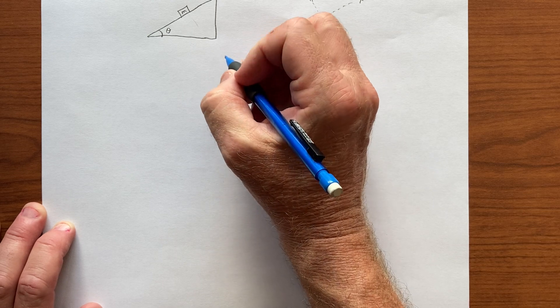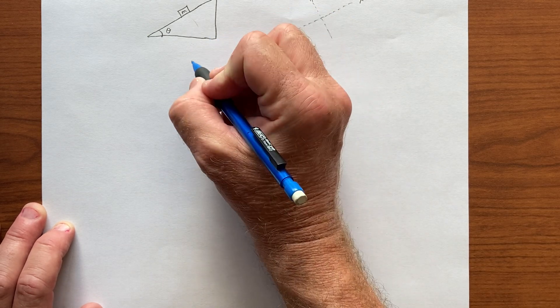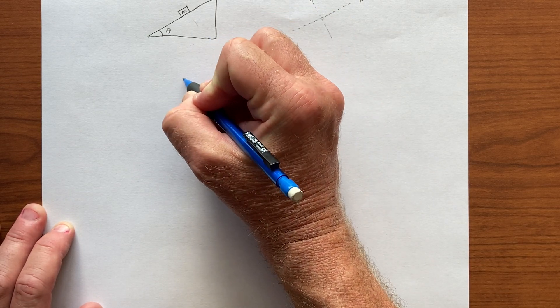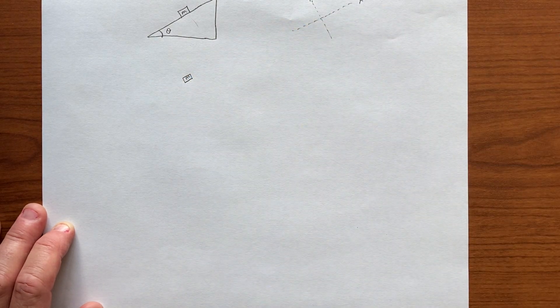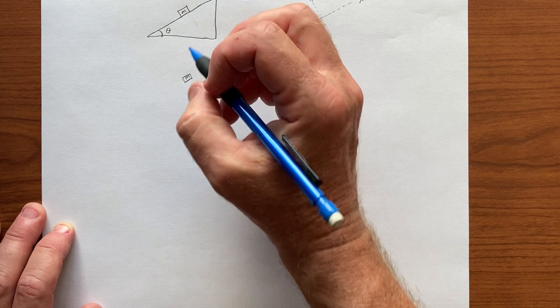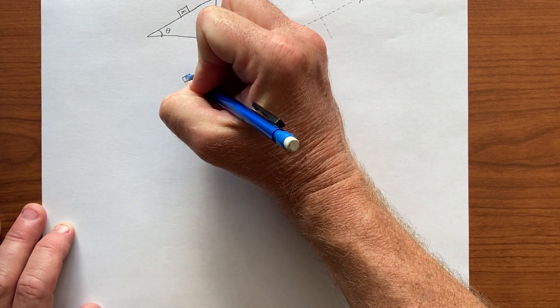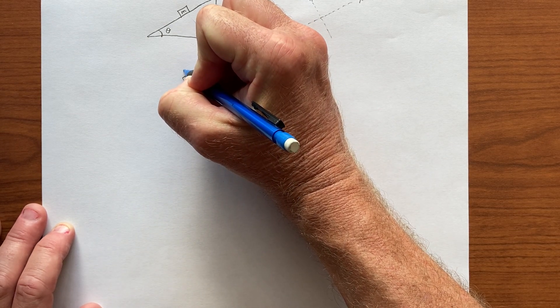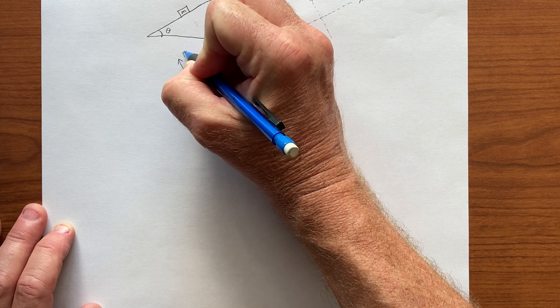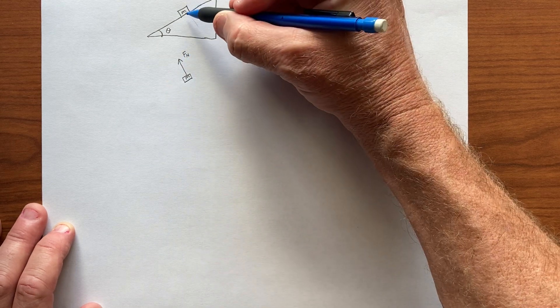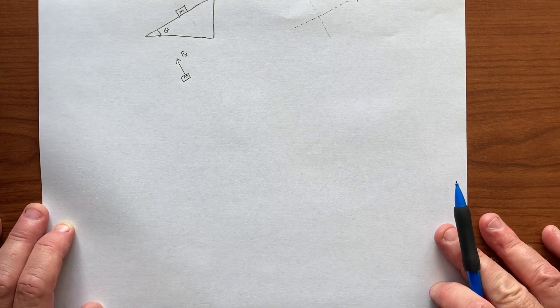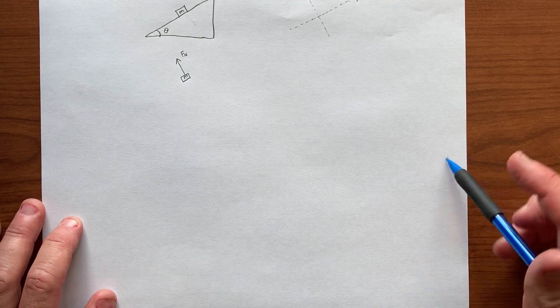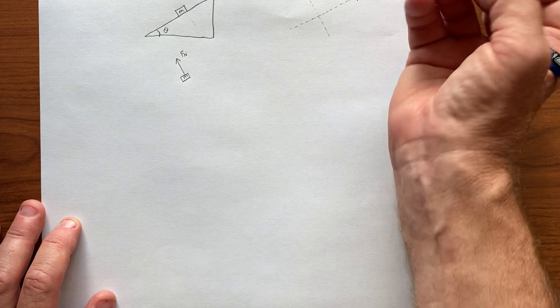So maybe we can do a free body diagram, and let's pull the object out of its environment. There it is, with mass m. And in the tilted vertical direction, we know that there's a normal force. The object isn't falling through the surface, the inclined plane, and so there must be a force there that's normal to the surface, due to the surface itself.